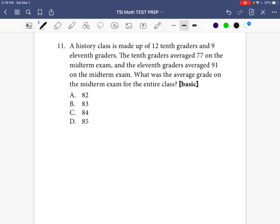Question number 11 says a history class is made up of 12 tenth graders and 9 eleventh graders. The tenth graders averaged 77 on the midterm exam and the eleventh graders averaged 91 on the midterm exam. What was the average grade on the midterm exam for the entire class?